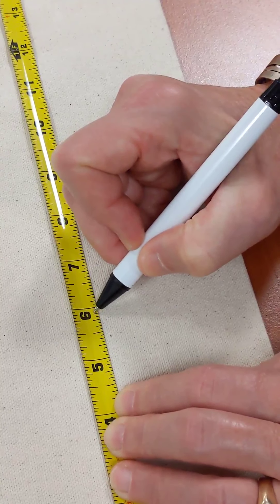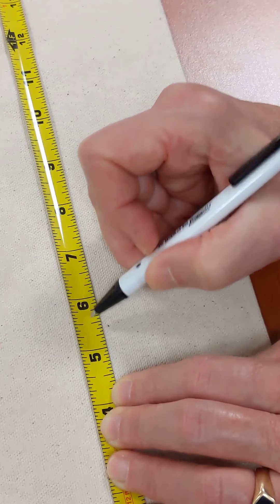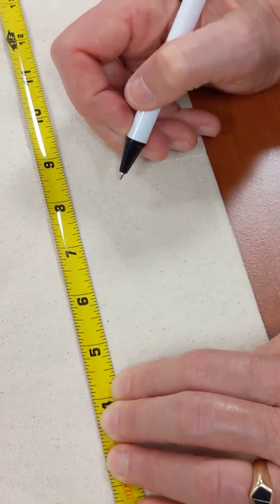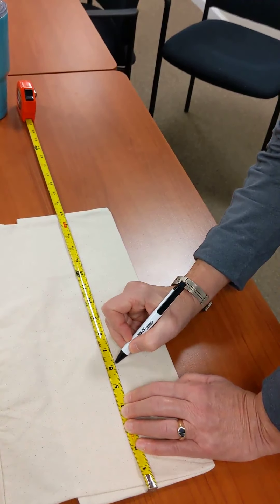So first, when reading a tape measure, find out what your increments are between the inches. It can be sixteen, I've seen eight, it only goes to eight. You just need to know that.